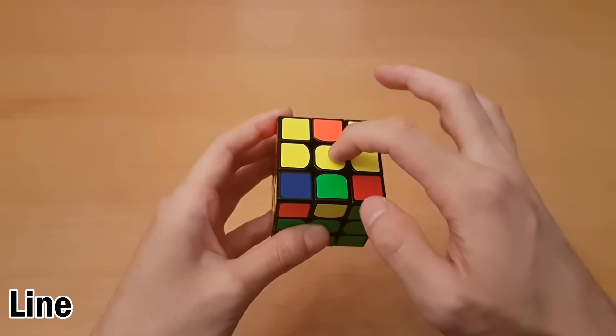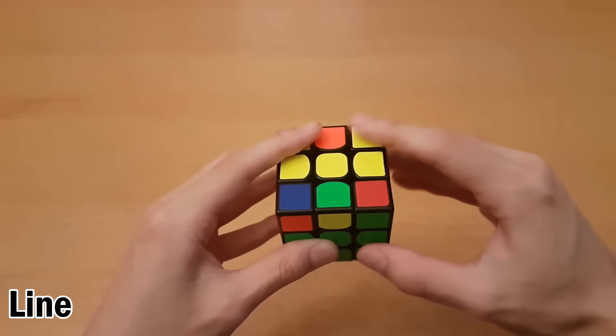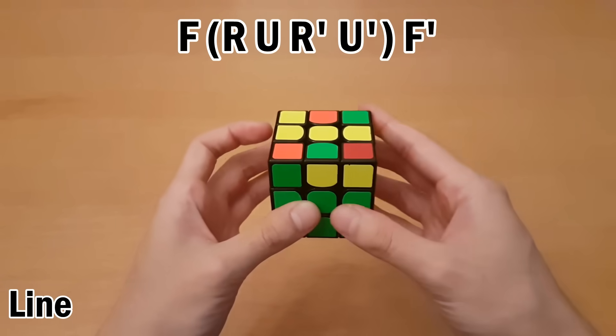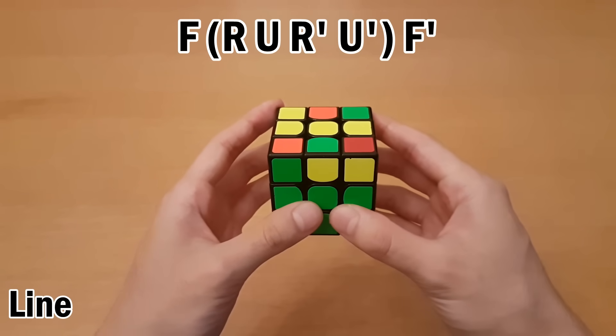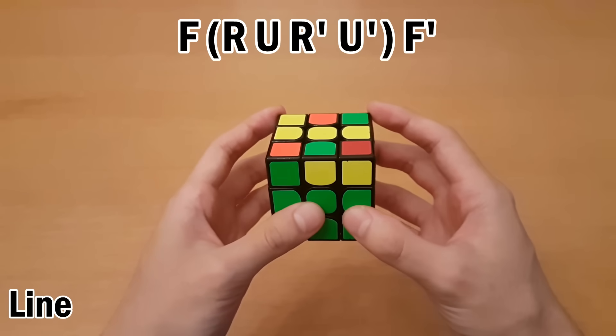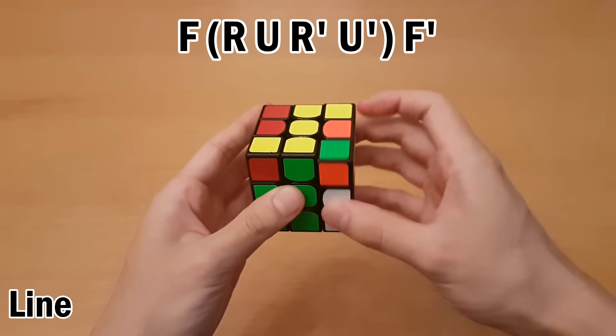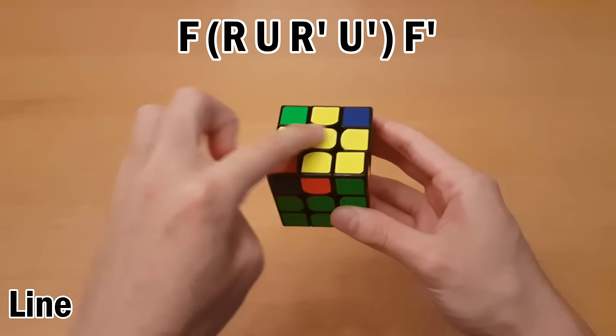Start by looking at all the edges that are the same color as this center. So we have this one and this one, and we'll ignore the corners. If you get the line, make sure you hold it horizontal, and then do this algorithm. If you don't know how to read the algorithm, you can check the description for notation, or you can just watch what my hands do. That goes like this: turn the front clockwise, R, U, R', U', and then undo that front move. So now the cross is done on top.